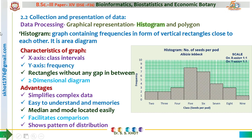In a histogram, the X axis shows class intervals, the Y axis shows frequency, and the rectangles are drawn without any gap — this is the key characteristic of a histogram. If a gap is placed between two different classes, that type of graph is called a bar graph, not a histogram.